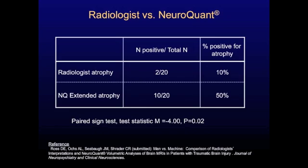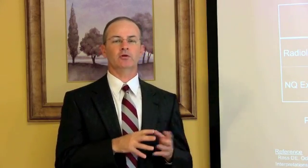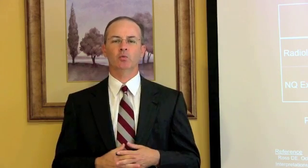By contrast, NeuroQuant using the extended analysis approach found at least one sign of atrophy in 10 out of 20 patients — that is 50% of the group. That was statistically significantly higher than what the radiologists found. So basically, NeuroQuant is better at detecting atrophy according to this small study. Does that mean we should use NeuroQuant instead of radiologists? No. Radiologists still do a lot of things that NeuroQuant doesn't do. We don't want to replace radiologists with NeuroQuant, but we do think NeuroQuant is a tool that can complement what radiologists do.